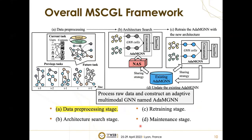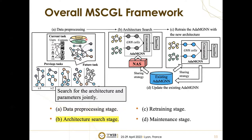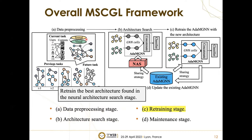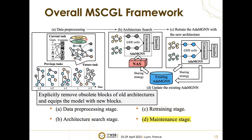Let's come to the main point of our proposed method. The life cycle of the MSCGL framework comprises four stages: the data pre-processing stage, the training stage, the architecture search stage, and the maintenance stage. In the data pre-processing stage, we process raw data and construct an adaptive MGM. In the neural architecture search stage, we search for architectures and parameters that not only remember past knowledge but also perform well on new tasks. In the shared model training stage, we train the best architecture found in the last stage. In the maintaining stage, we explicitly remove obsolete blocks of old architectures and equip the model with new blocks that save knowledge from both new tasks and history tasks.